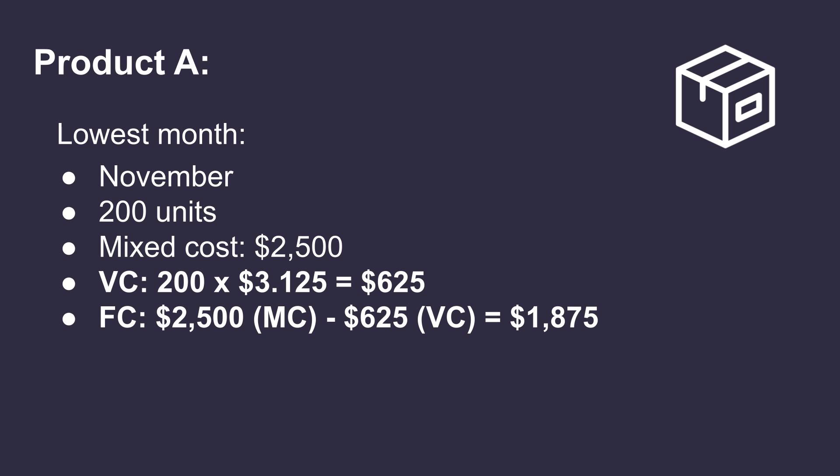Let's plug in the figures for the month of November. 200 units times $3.12, which is equal to $625. Therefore, $2,500 minus $625, which is the variable cost, will give you a fixed cost of $1,875.